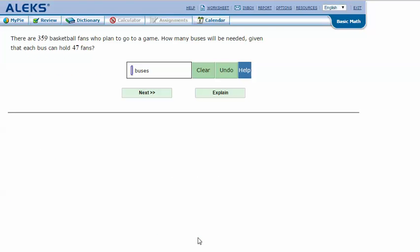There are 359 basketball fans who plan to go to a game. How many buses will be needed given that each bus can hold 47 fans?